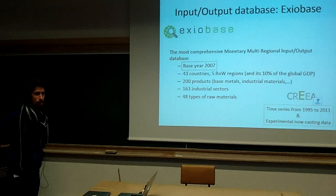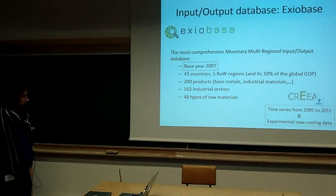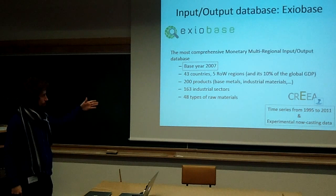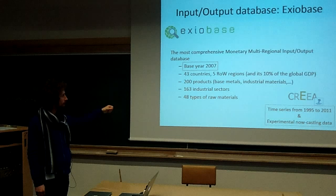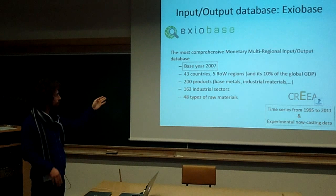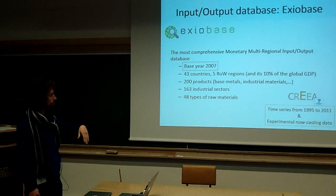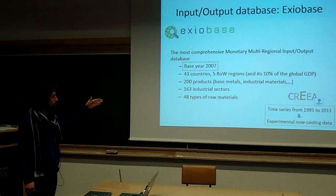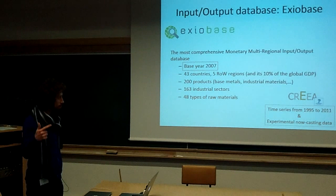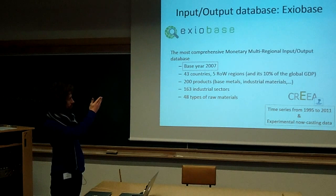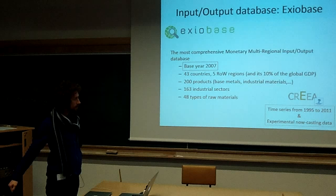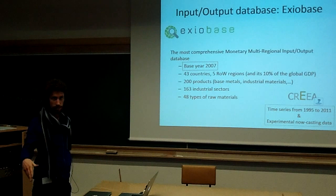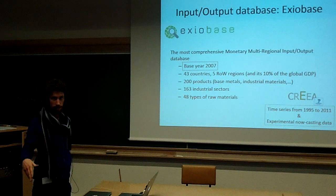I use the ExioBase database for input-output data, which is a database from a European project. I use this database because it provides results about products in physical input-output format for 43 countries — mainly major world economies — and five rest-of-the-world regions representing almost 90% of GDP. They give input-output results for 200 products, mainly base metals, industrial metals, fuels, etc. The data have a 2007 base year, but in a few months they will release, through another European project called CREEA, a time series from 1985 to 2011, and also a methodological tool to provide now-casting data.